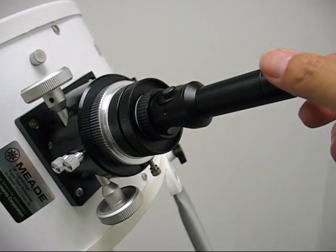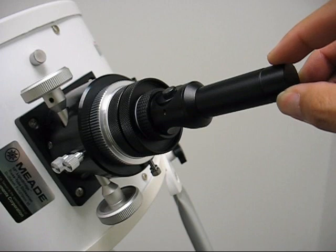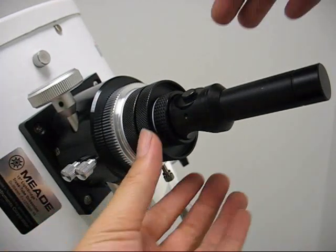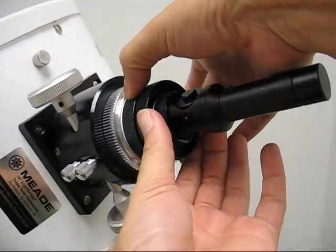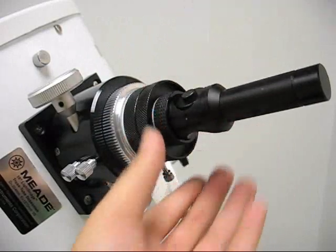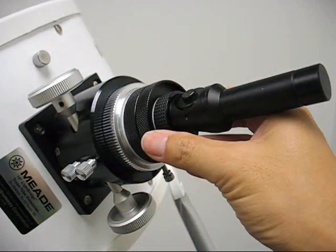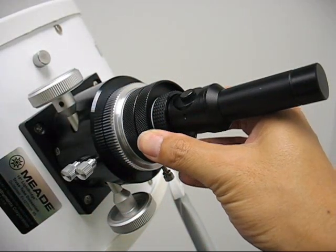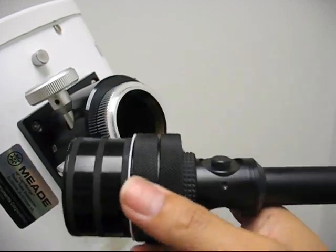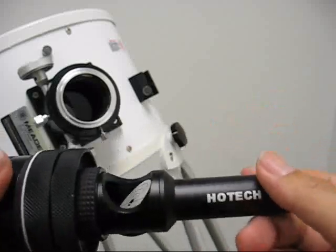You can turn off the laser by turning the end cap counter-clockwise. Then remove the collimator by unthreading the compression ring until it stops. Then you push the collimator straight in, then pull back out. You are ready to use your telescope.